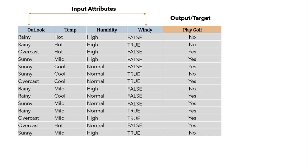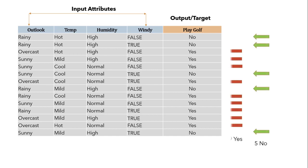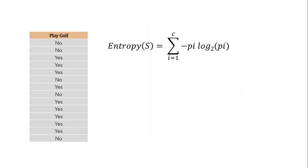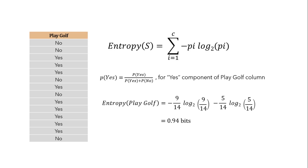We will be using the ID3 algorithm for building the decision tree. First, let's count the number of yes and number of no for the output column, that is play golf. Here we have 5 no's and 9 yes. We will calculate entropy for the target variable. The formula for entropy is sigma of minus pi log pi — we have already seen this in the last video. Substituting the values of yes and no, we get entropy for play golf as 0.94.